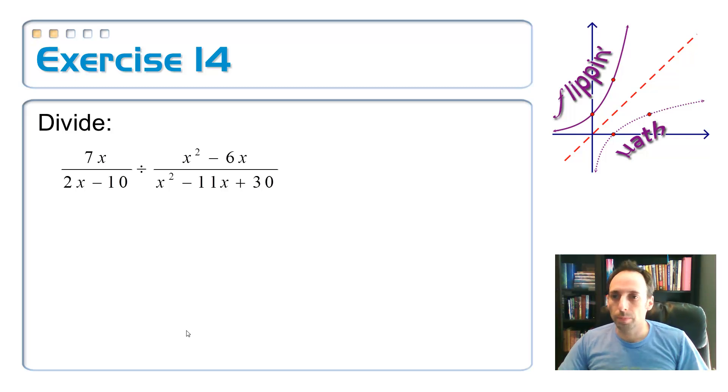So let's divide on this one. Factor first step, so we can cancel stuff out and make this a little bit easier. Now what I'm going to do is I'm going to both factor and flip the second one at the same time. Two steps at once. So in the top, doesn't factor, 7x. Bottom, I can factor out a 2. So 2 and then an x minus 5.